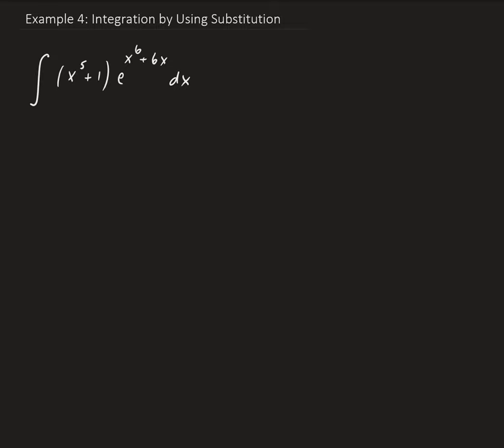In this problem, we're going to use a substitution method for integration. Whenever we have e involved, the first thing you want to do is let u be the argument of e. We're going to let u equal x to the sixth plus six x. We want to let u be this part. That's the argument of the exponential function here.